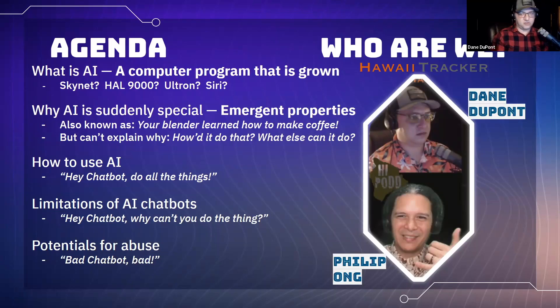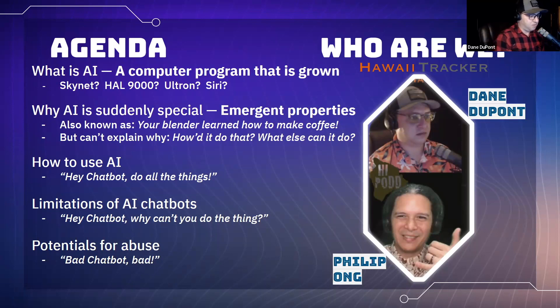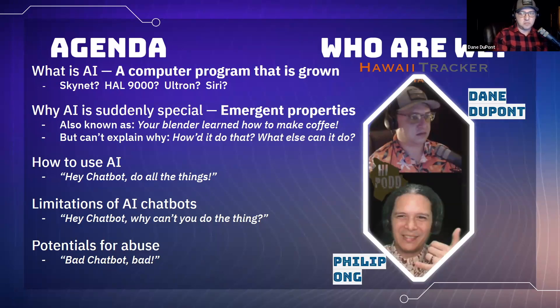So really, we're talking about these emergent properties. And the way I like to describe this is, say we were to go out and build a tree — Vibrant Hawaii, everybody here, all the resilience hubs — we're going to go out and build a tree.